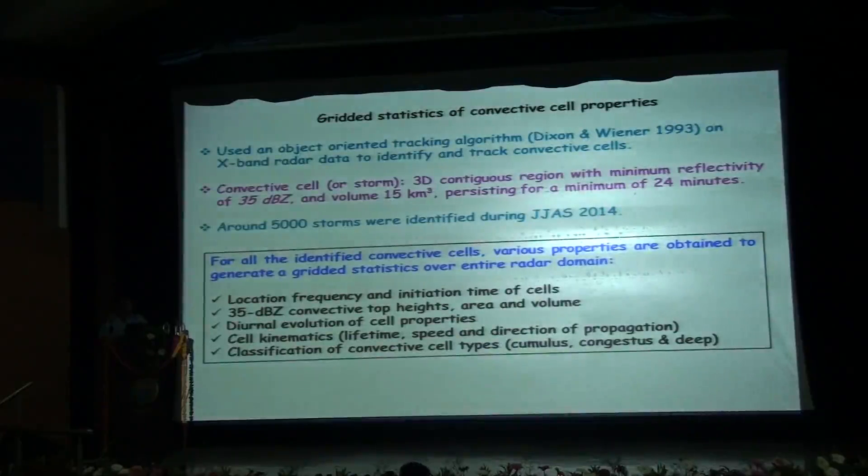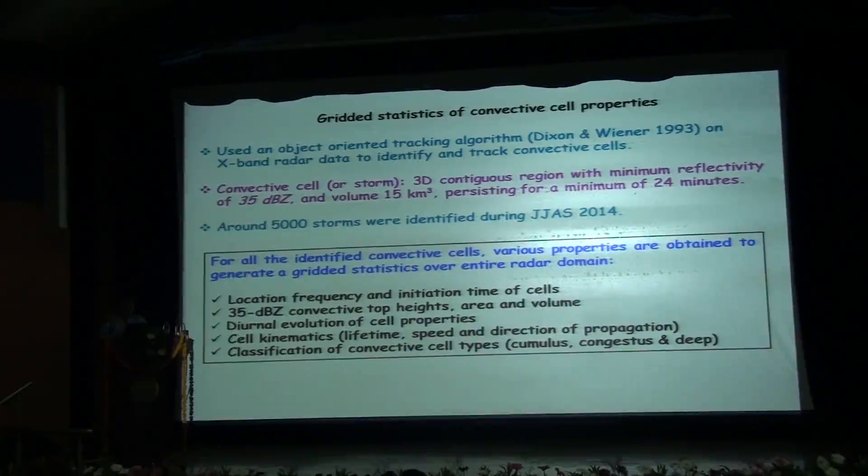This radar provides maps of precipitation with mesoscale coverage and convective scale resolution. It scans the entire volume of the atmosphere at every 12-minute scan interval encompassing an area of 50,000 square km, that is, it has a radius from its center to about 125 km. We generate a gridded statistics of convective cell properties. Here we use an object-oriented tracking algorithm based on a Lagrangian approach on the X-band radar data to identify and track convective cells. Here the convective cells or storms, which I shall be interchangeably using in my subsequent slides, is defined as a three-dimensional region of contiguous reflectivity with a minimum reflectivity of 35 dBZ, having a volume of 15 cubic km and persisting for a minimum of two radar scans, that is 24 minutes.